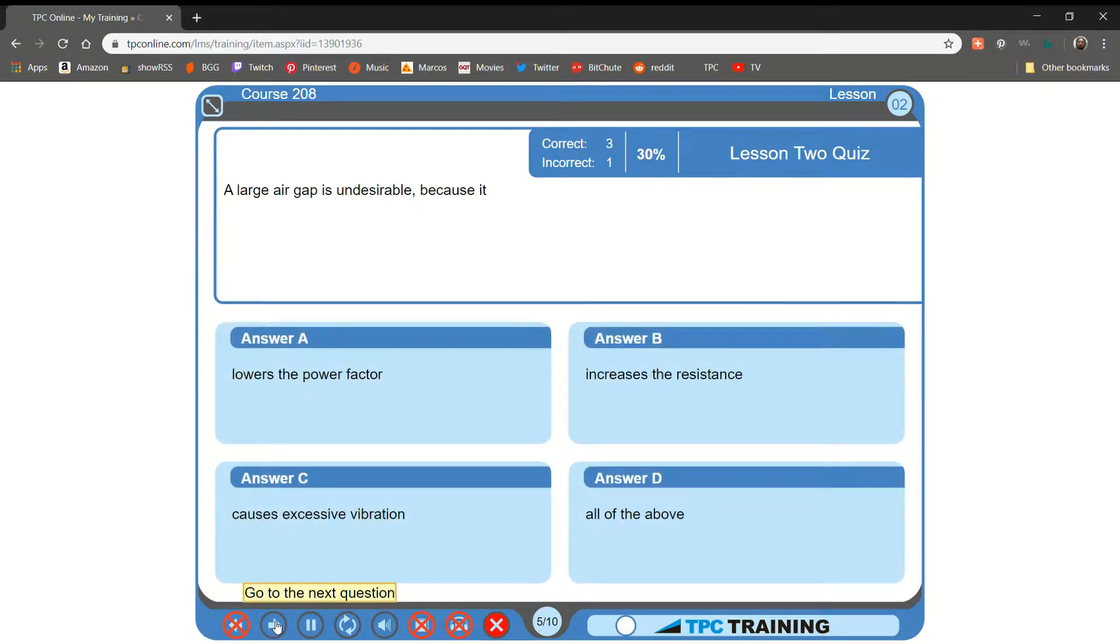A large air gap is undesirable because it A. Lowers the power factor. B. Increases the... That is not correct.